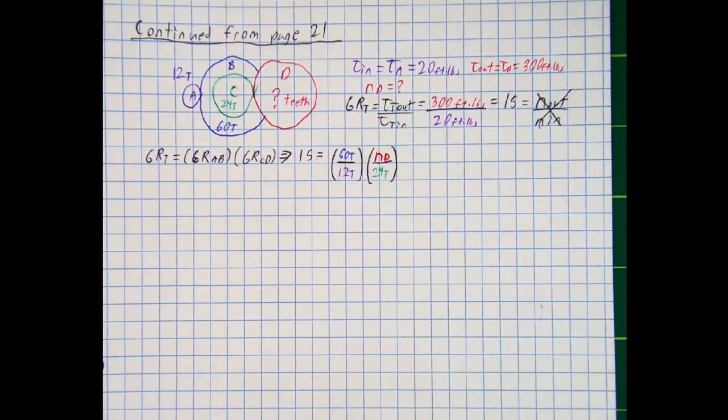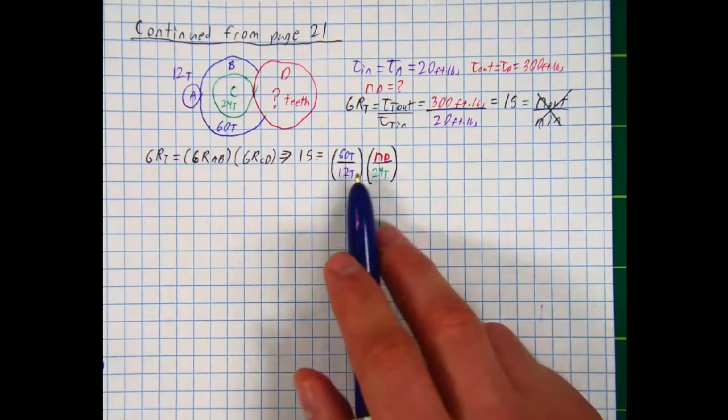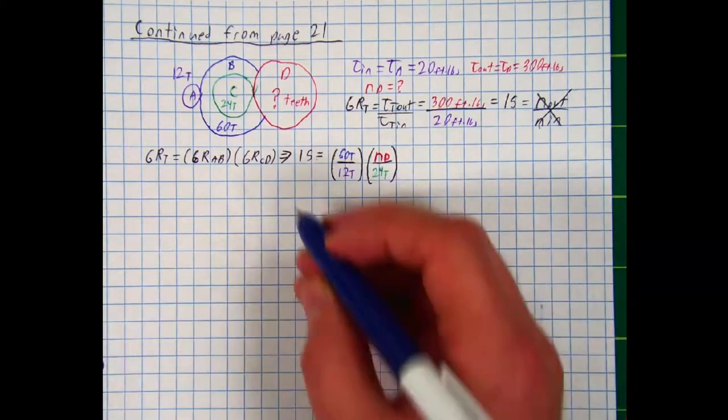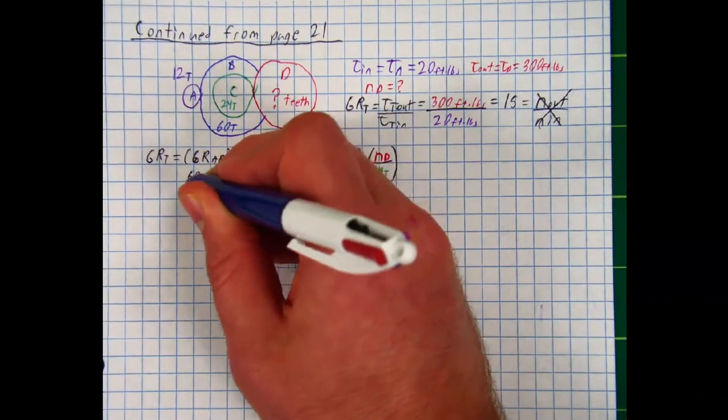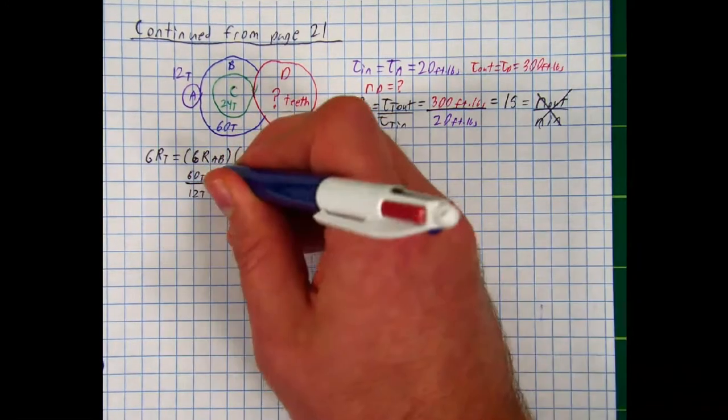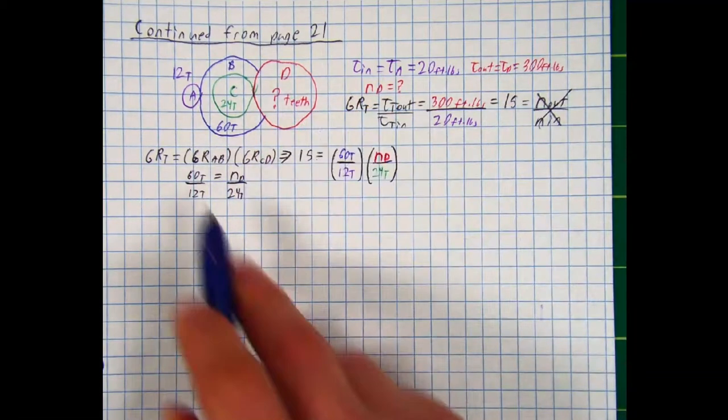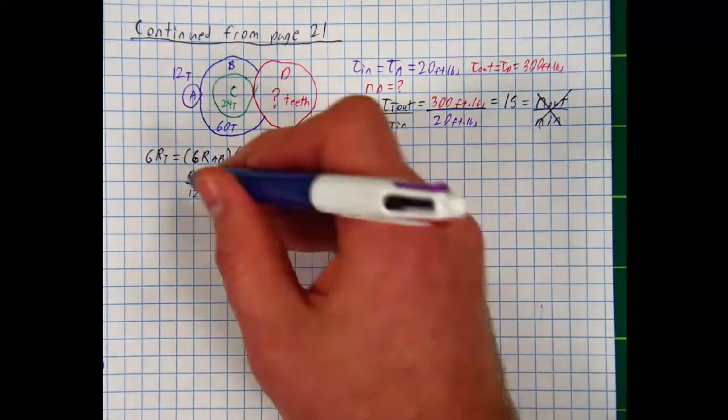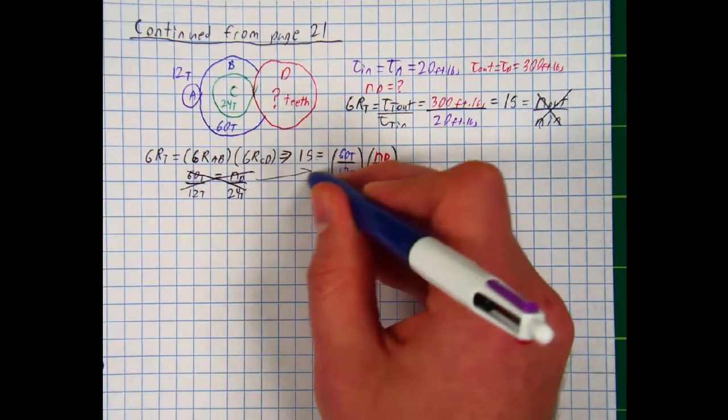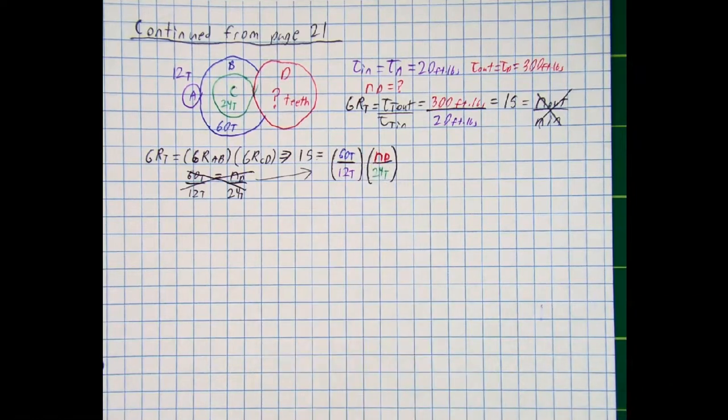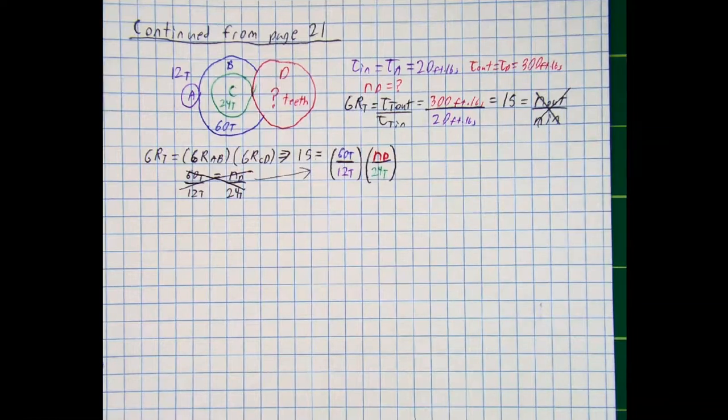And so we can use this to solve for our number of teeth D. Now I'm going to stop right here and make something very clear. Because a lot of students get this confused. When they see these two gear ratios multiplying by each other, what they think they see is this 60 teeth divided by 12 teeth equals the number of teeth at D divided by 24. And they end up cross-multiplying and dividing these numbers. This is not what this says. This says 15 equals these two individual gear ratios multiplied, which is a very, very different thing. Just so we're clear, do not get these two confused.